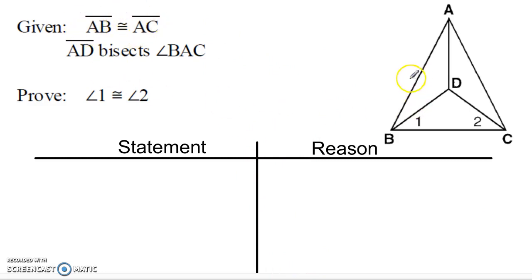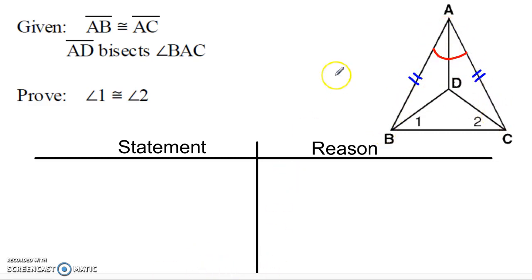I'll begin by marking up the picture. I have AB congruent to AC — that's this piece here and this piece here. I also have that AD bisects angle BAC. This is angle BAC — B to A to C — and if it's bisected, it's divided into two congruent angles. Let's call those angles 3 and 4. With a quick reflexive on AD, I've got a set of congruent triangles by side-angle-side.